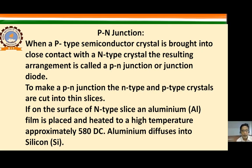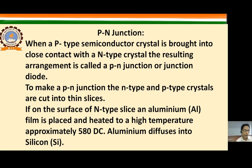If on the surface of an n-type crystal slice an aluminum film is heated to a high temperature of approximately 580 degrees Celsius, the aluminum diffuses into the silicon. In this way a p-type semiconductor is formed on an n-type semiconductor.